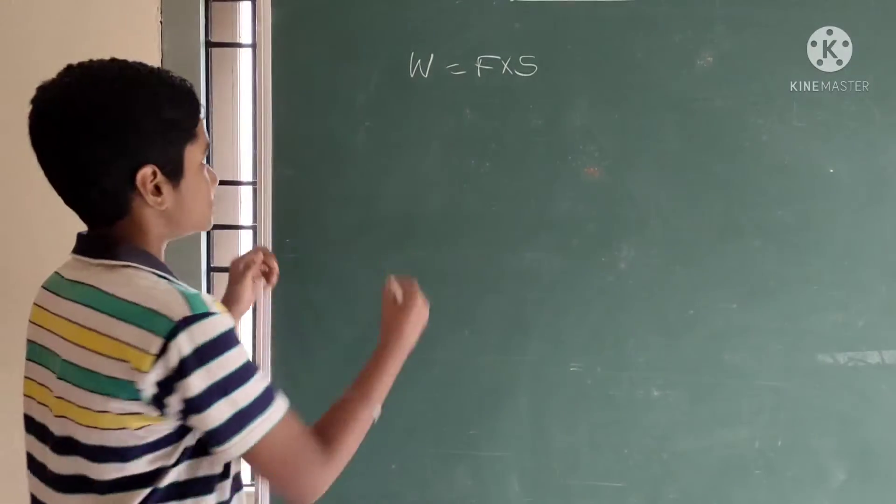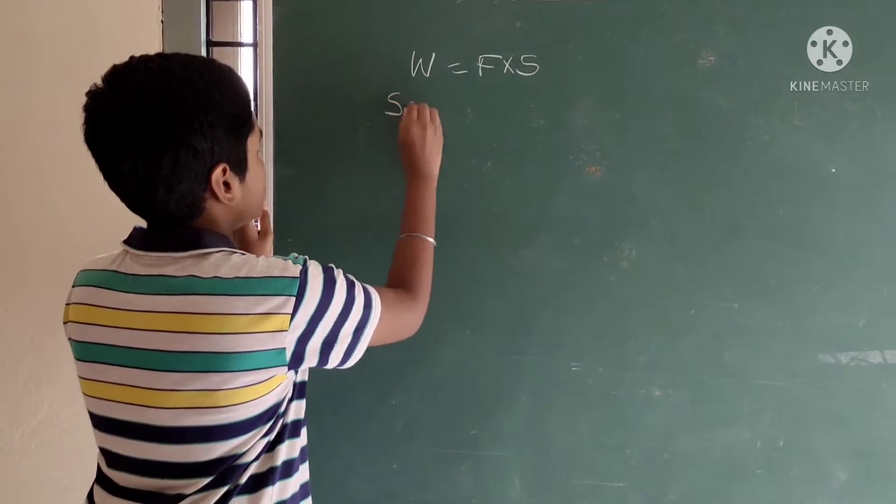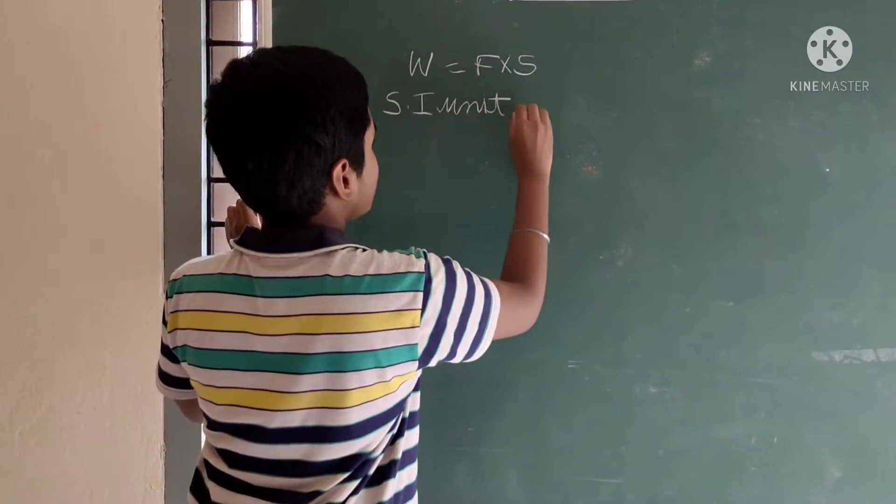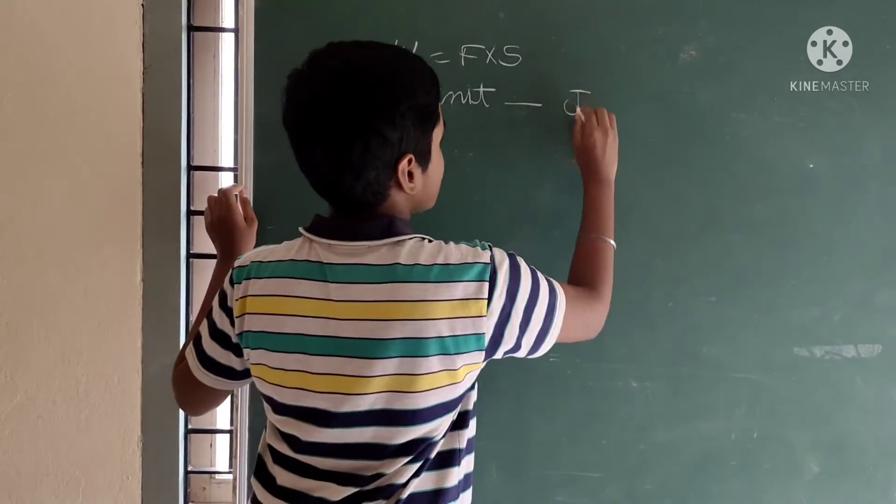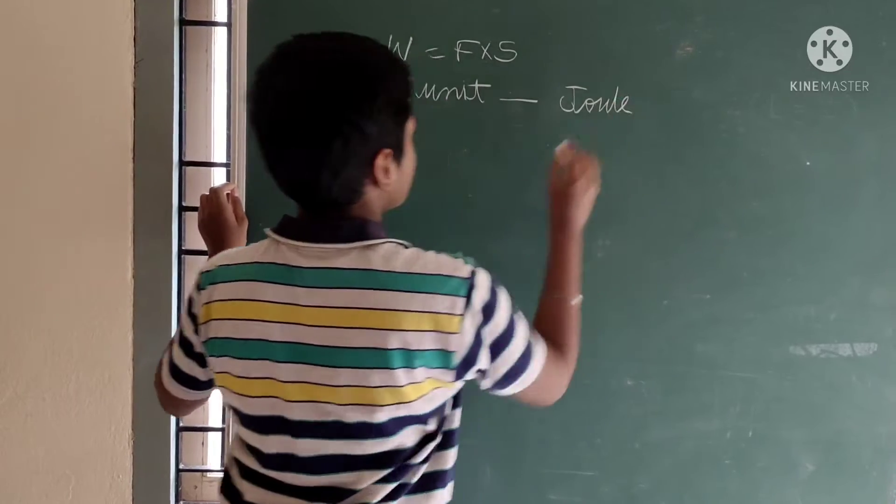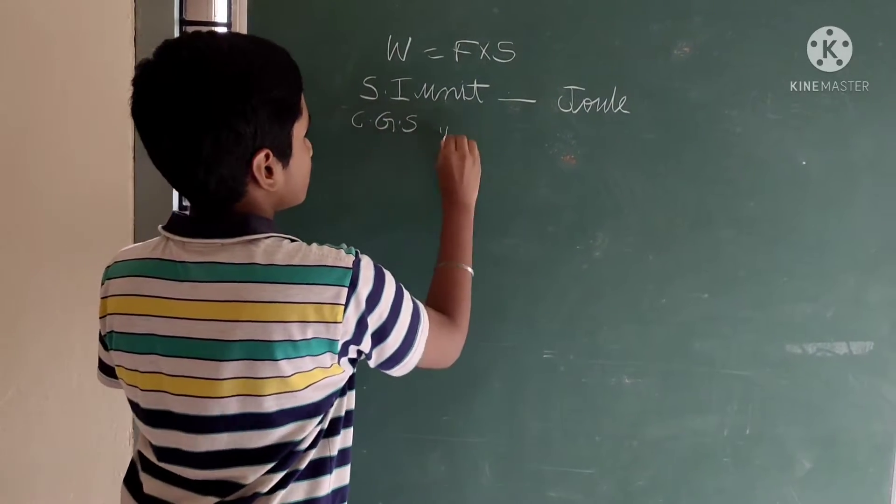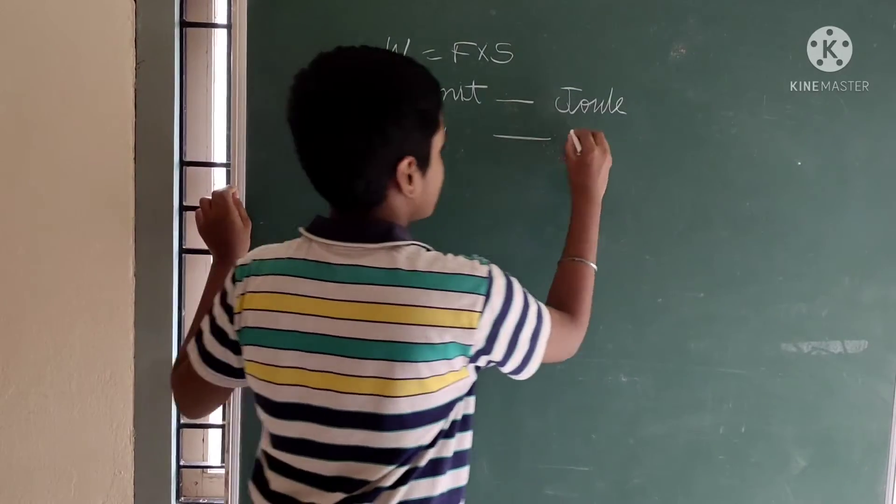Units of work: SI unit of work is joules, and CGS unit of work is erg.